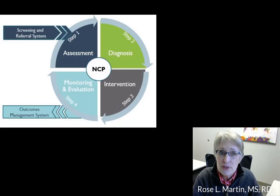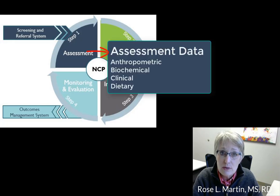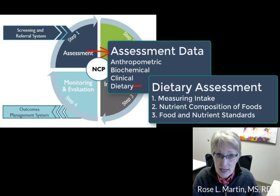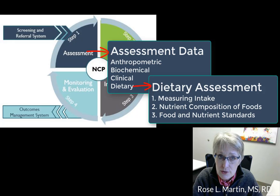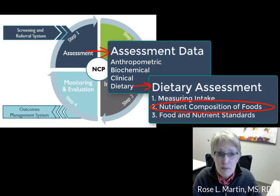The first step of the nutrition care process is assessment. For this step you gather anthropometric, biochemical, clinical, and dietary data. For dietary data you need to measure dietary intake, know the nutrient composition of those foods, and identify the specific food or nutrient standard to compare it to. This video focuses on those nutrient composition databases, which is often the most underappreciated aspect of completing a dietary assessment.